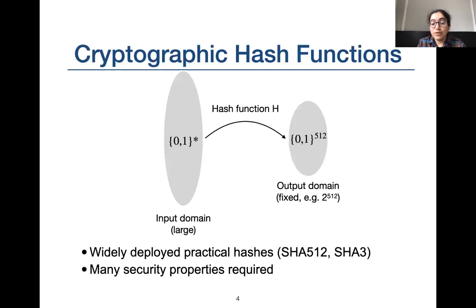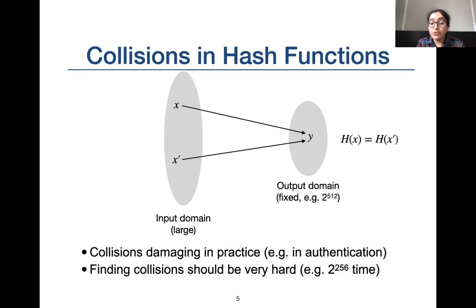Cryptographic hash functions are functions that satisfy properties like collision resistance. They take an input string of arbitrary size and output a string of fixed size, mapping a larger, possibly infinite domain to a smaller domain of fixed size. For an output domain of size 2^512, we would want collision finding to require about 2^256 operations.